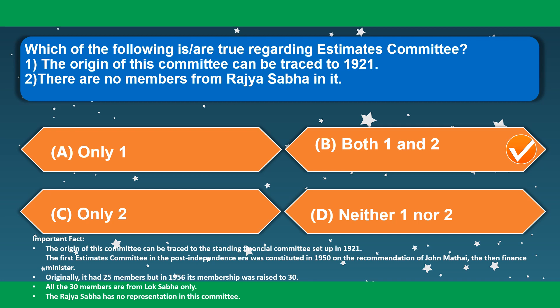Which of the following is true regarding the Estimates Committee? The origin of this committee can be traced to 1921 — correct. The first Estimates Committee in the post-independence era was constituted in 1950 on the recommendation of John Mathai, then Finance Minister. Originally it had 25 members, but in 1956 its membership was raised to 30. All 30 members are from Lok Sabha only; the Rajya Sabha has no representation in this committee.